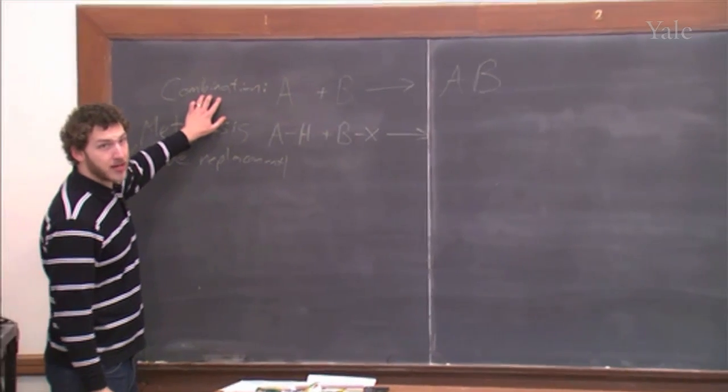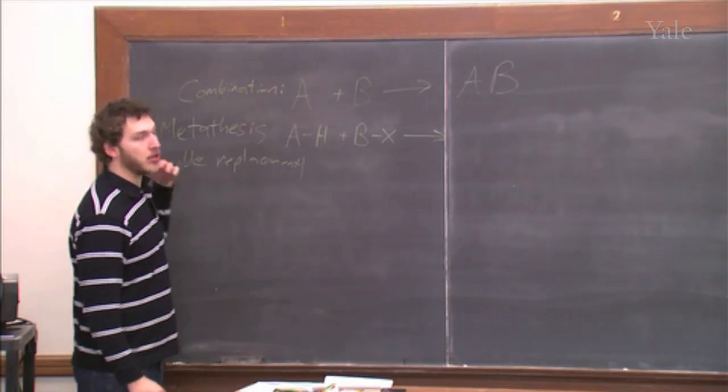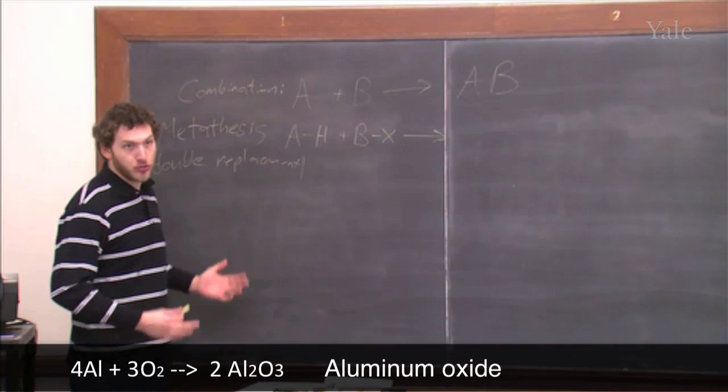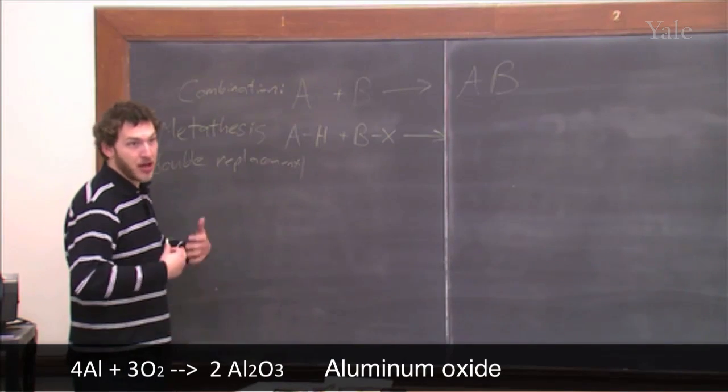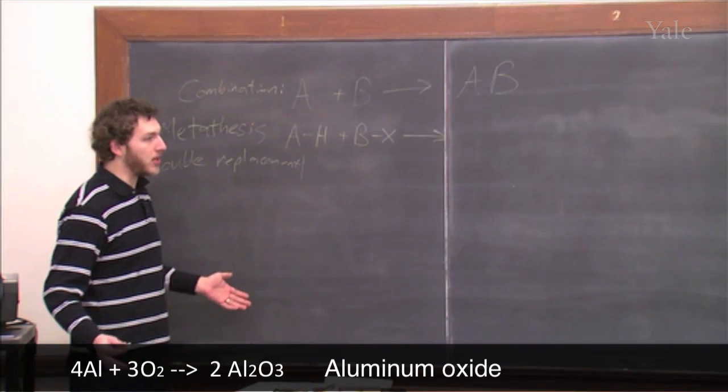Sometimes there are direct combinations. If you take aluminum metal and you burn it in air, you get aluminum oxide. And there's nothing else that's produced other than heat and a lot of light.